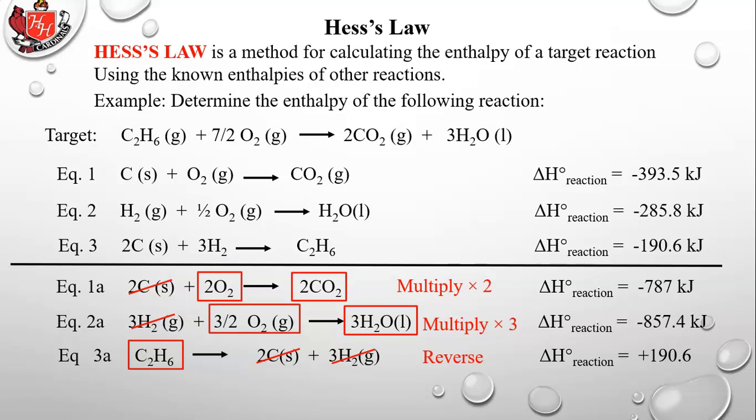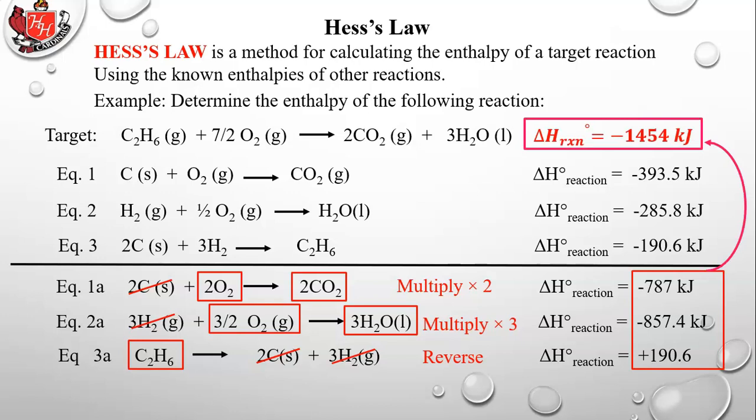Now we add up the enthalpies: negative 787 plus negative 857.4 plus positive 190.6 equals negative 1,454 kilojoules. That's the delta H of reaction for the target equation. Hess's Law allows you to calculate the unknown enthalpy of a reaction by taking other reactions with known enthalpies — it's essentially the algebra of chemical equations, used in this class, AP chemistry, and college chemistry.